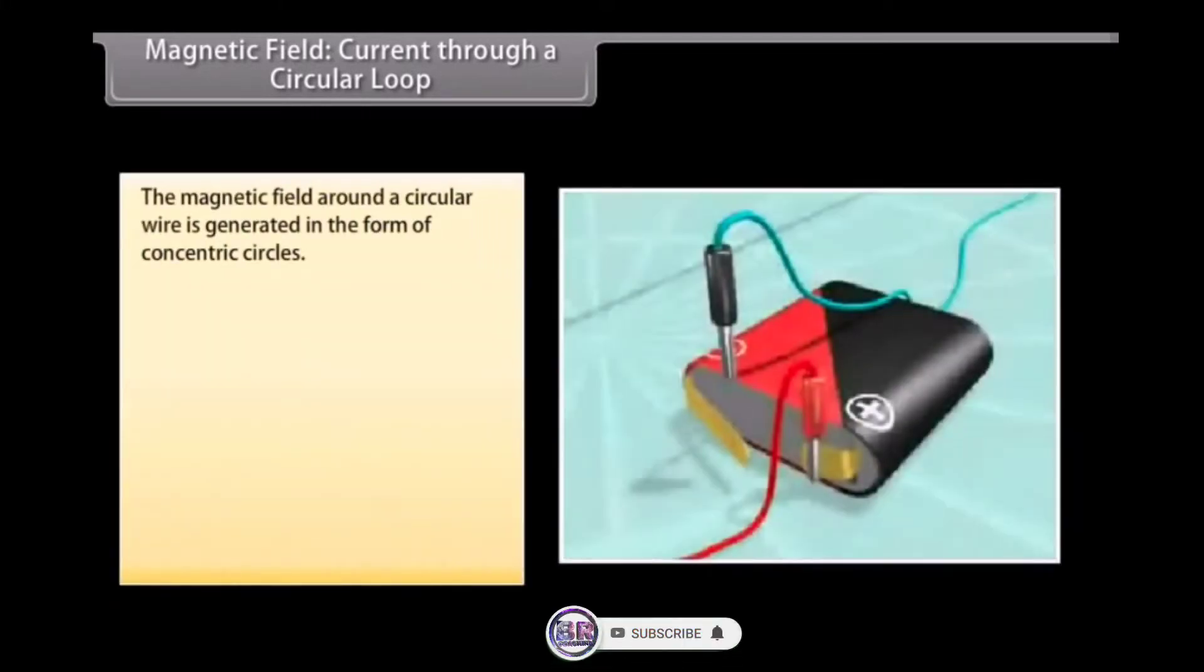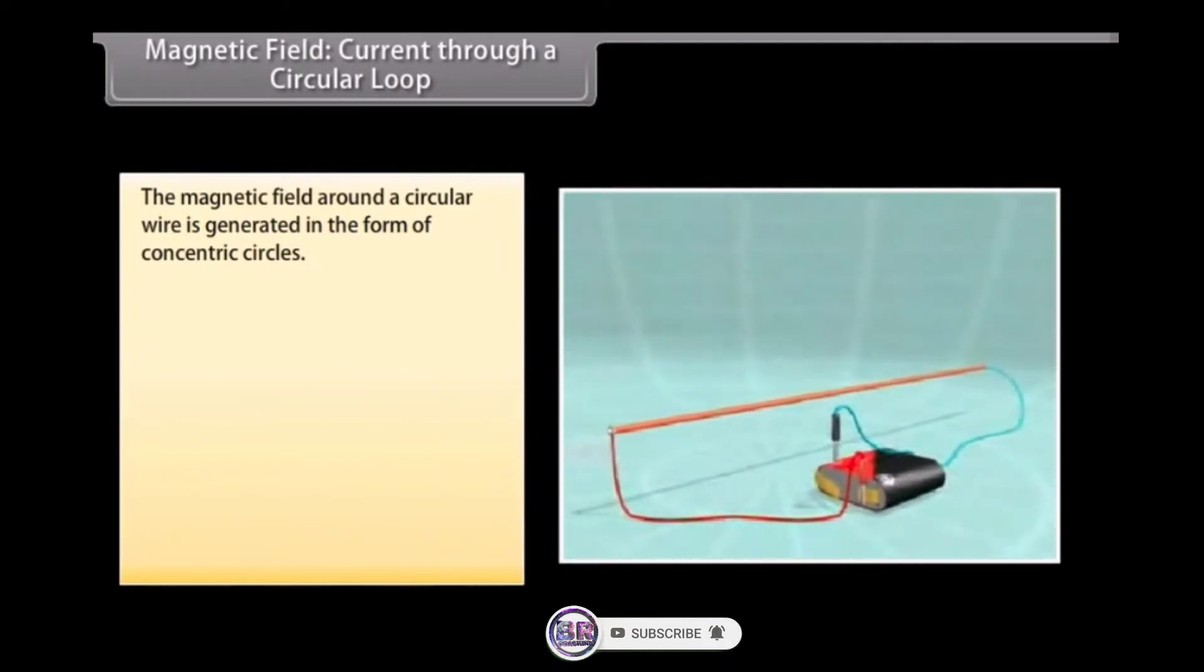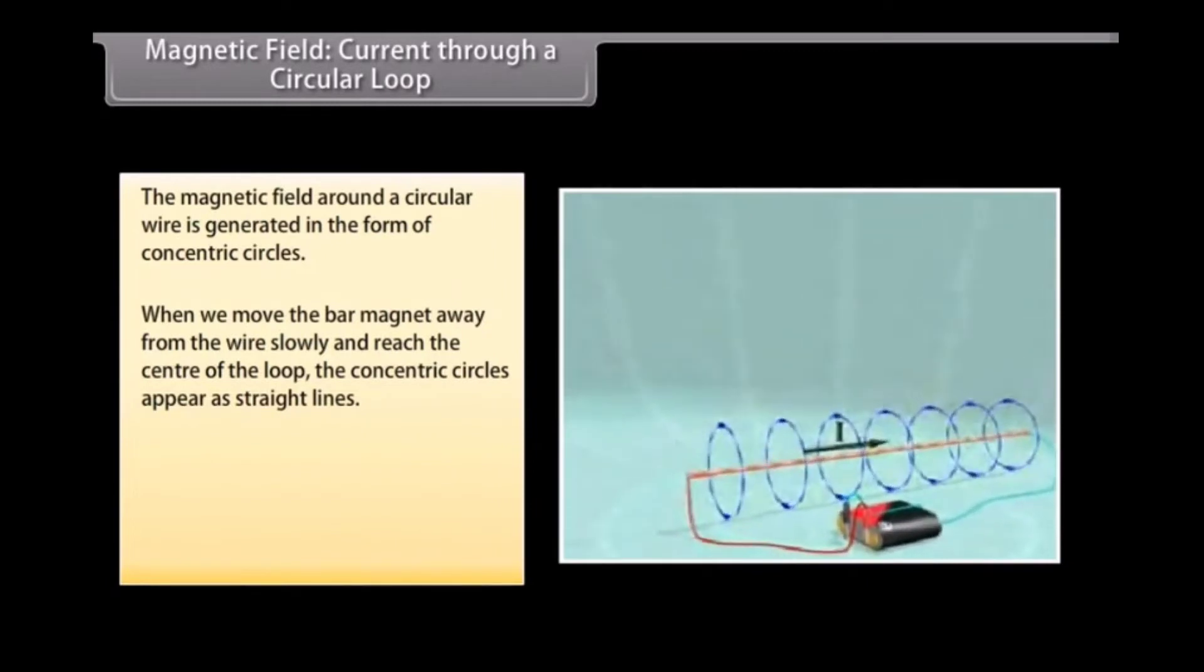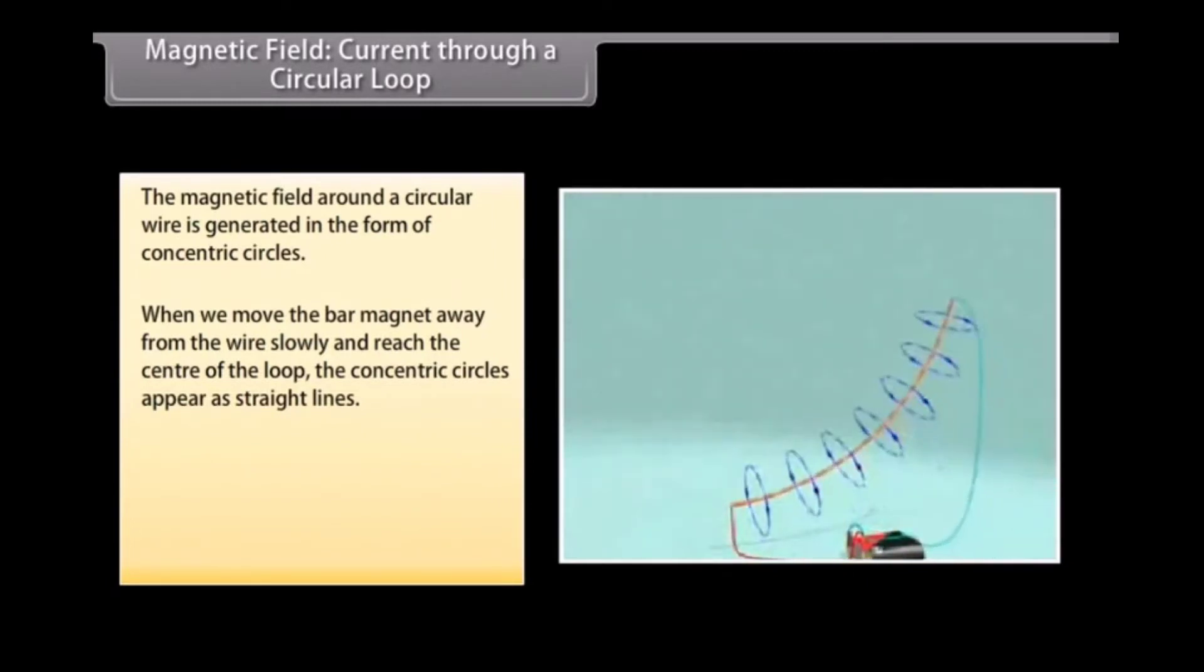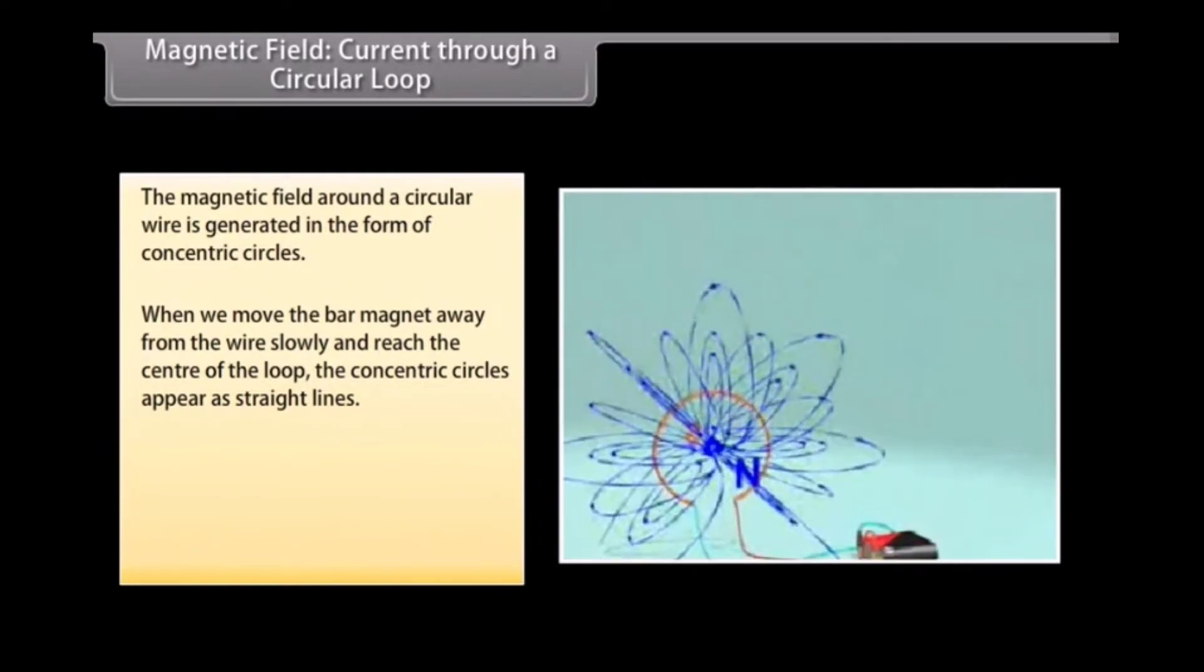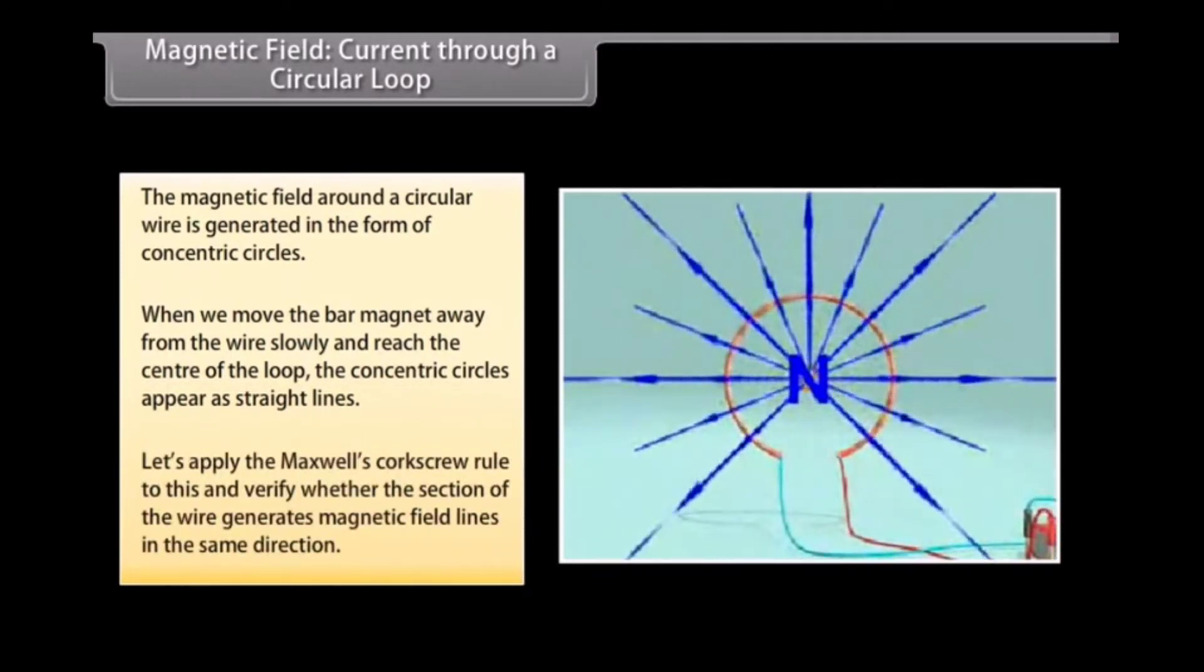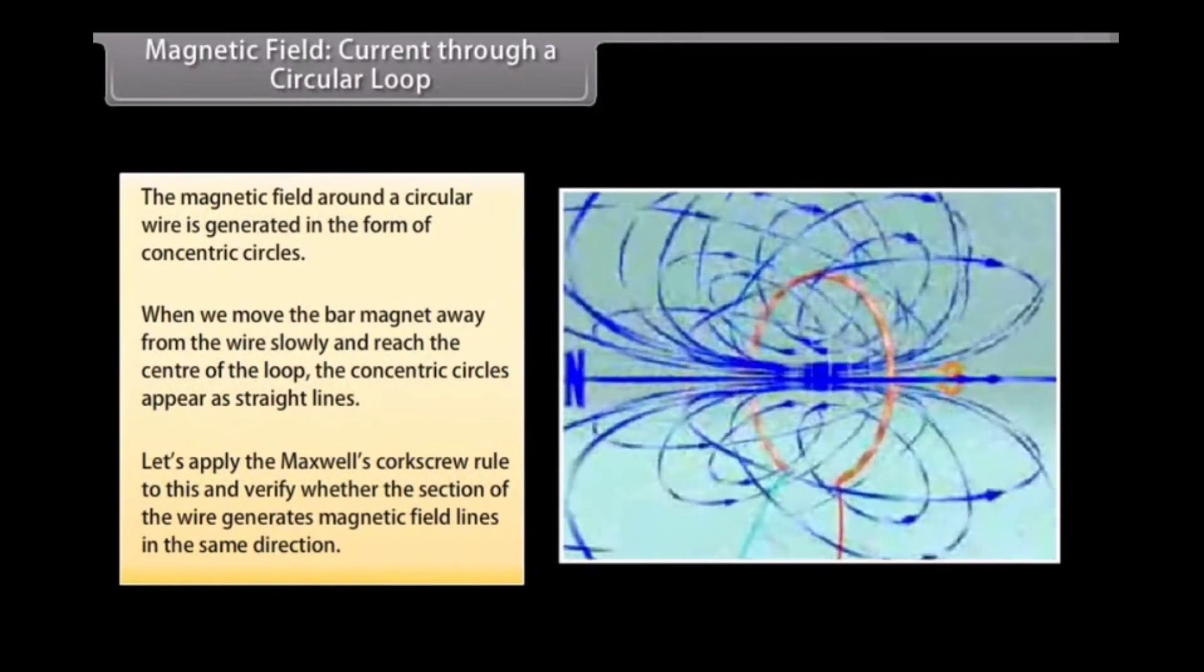Magnetic field current through a circular loop. Let us now look at what happens when the wire through which we passed the current is placed in a circular manner. The magnetic field around it is generated in the form of concentric circles. Try moving the bar magnet away from the wire slowly. By the time we reach the center of the loop, the concentric circles appear as straight lines. The entire magnetic field appears as a straight line. Now try applying Maxwell's Corkscrew Rule to this and check whether every section of the wire is able to generate magnetic field lines in the same direction.